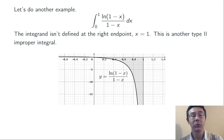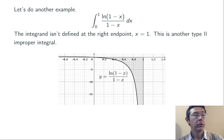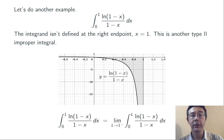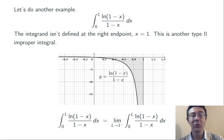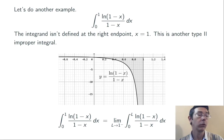This time the problem is at x equals 1. When x is 1, the natural log of 1 minus x is going to be the natural log of 0, which isn't defined. In the picture, you can see that vertical asymptote at x equals 1. So we're going to want to do this with a limit. We let L be slightly less than 1 and integrate from 0 to L instead of 0 to 1, then let L go towards 1 from the left. We always pick the direction of the one-sided limit so that we're avoiding the discontinuity.